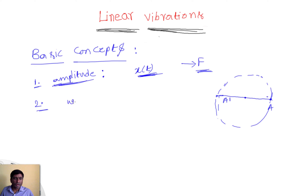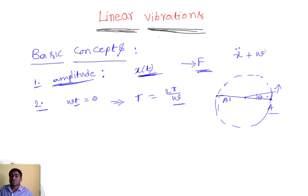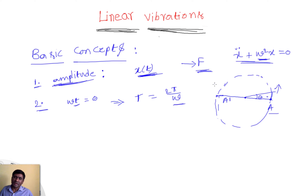We know that omega times t equals theta. For one full cycle, theta is 2 pi, which is 360 degrees. So the time period T equals 2 pi divided by omega, where omega is the angular velocity of the system. From the standard equation — x double dot plus omega squared times x equals zero — the quantity before x can be treated as the angular velocity of the system. When we develop equations of motion for different systems, we compare them with this standard equation to find omega.